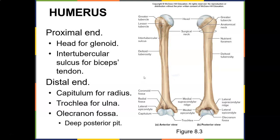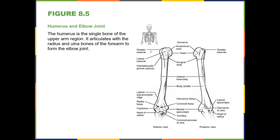Here's the humerus, which is technically what you'd call your shoulder bone. The proximal end — closest to the body — has the head for the glenoid and the intertubercular sulcus for the biceps tendon. The distal end — furthest from the body — has a capitulum for the radius (radius is lateral) and the trochlea for the ulna. There's also the olecranon fossa posteriorly, a deep posterior pit — what you'd call your elbow. When you touch your elbow, you're touching the olecranon process, which fits in the olecranon fossa.